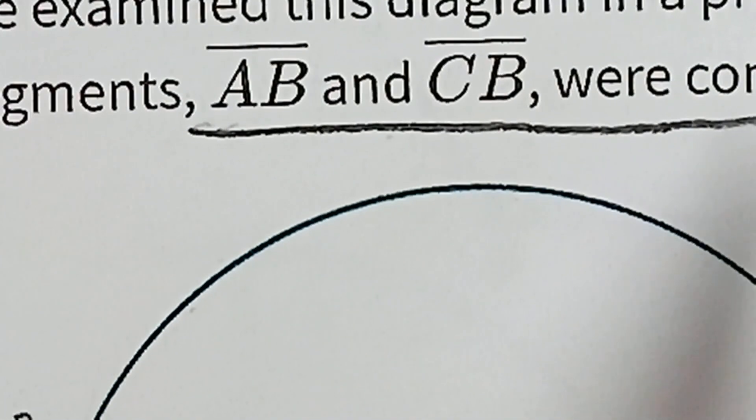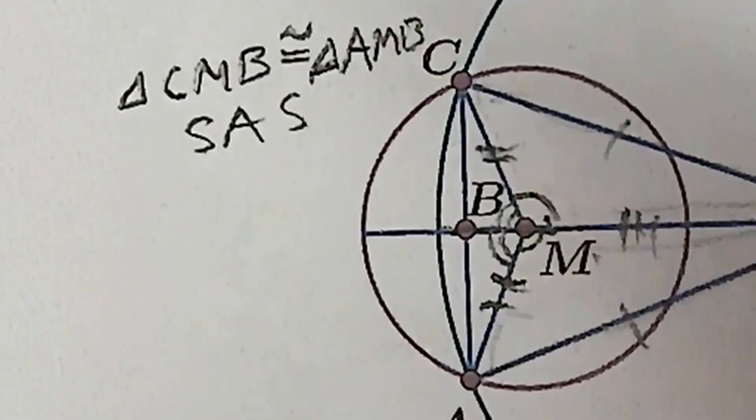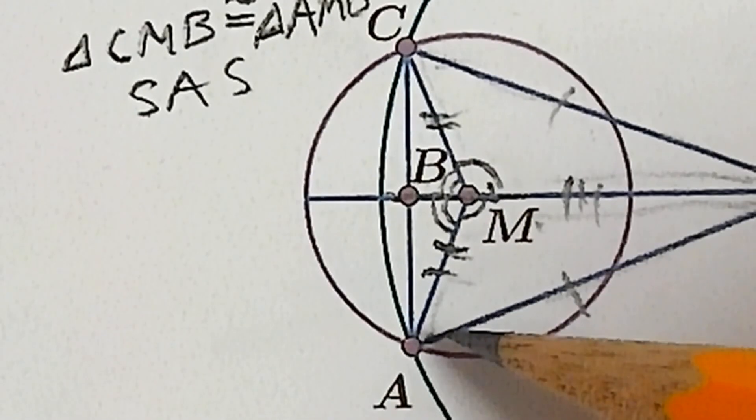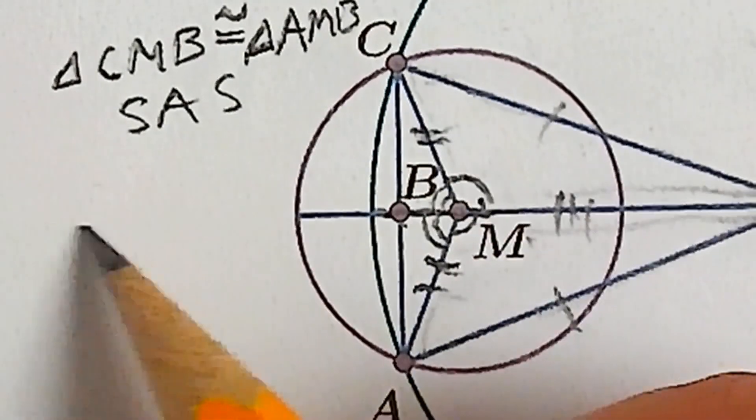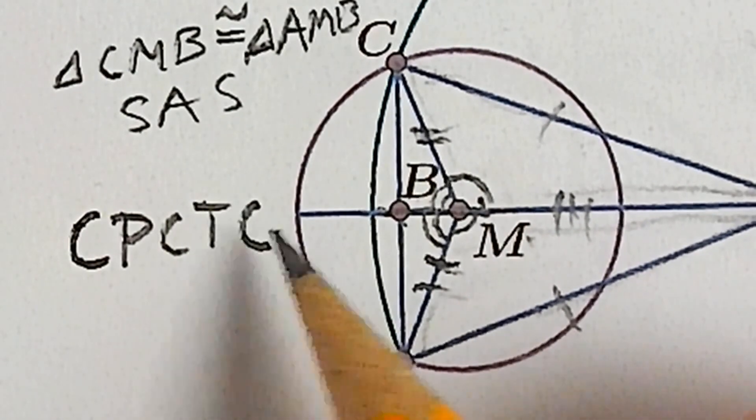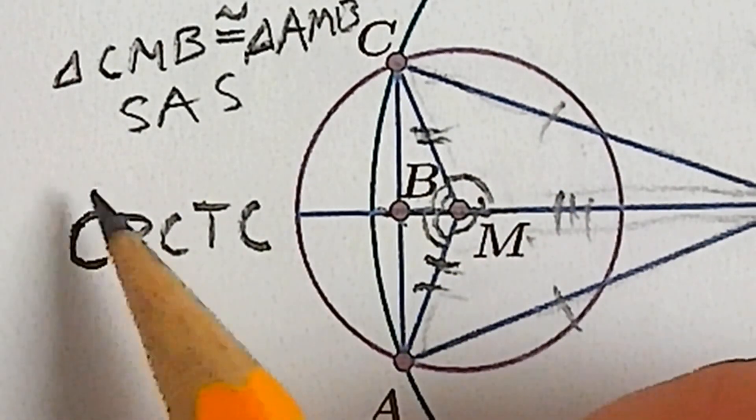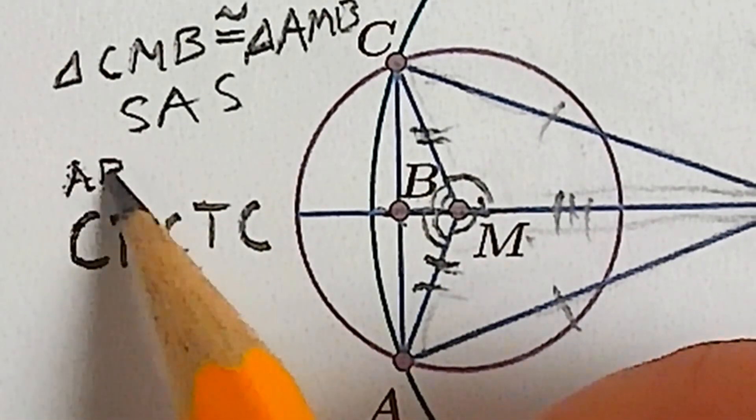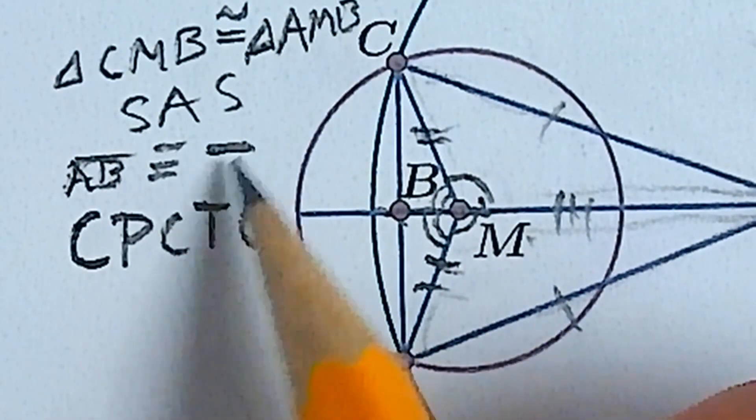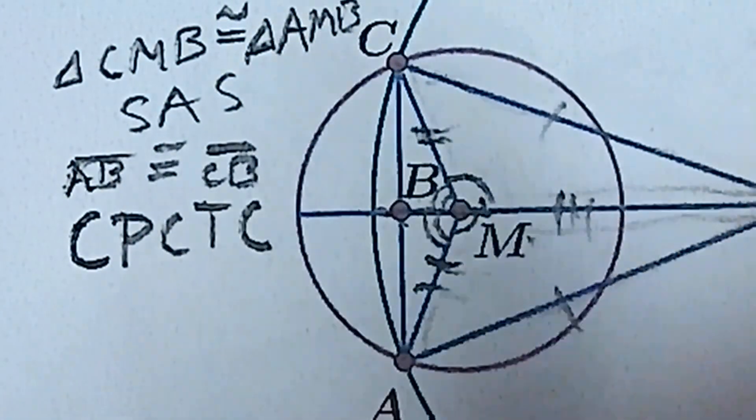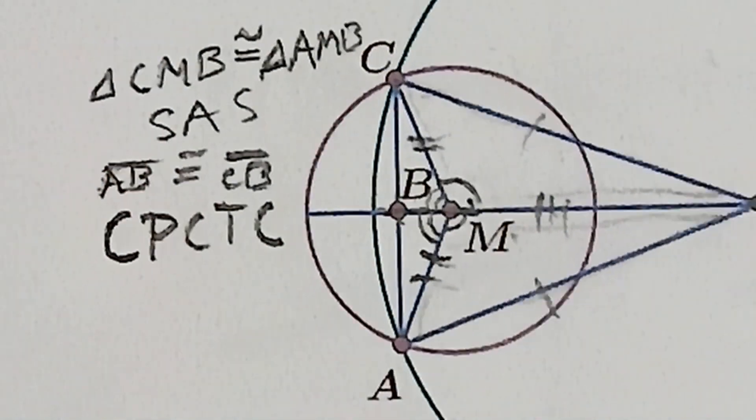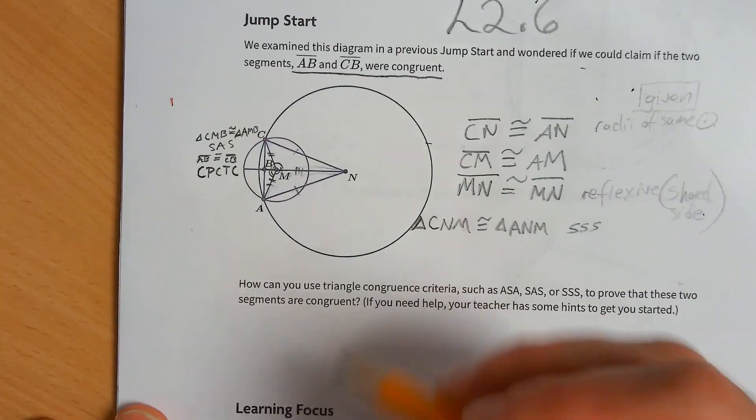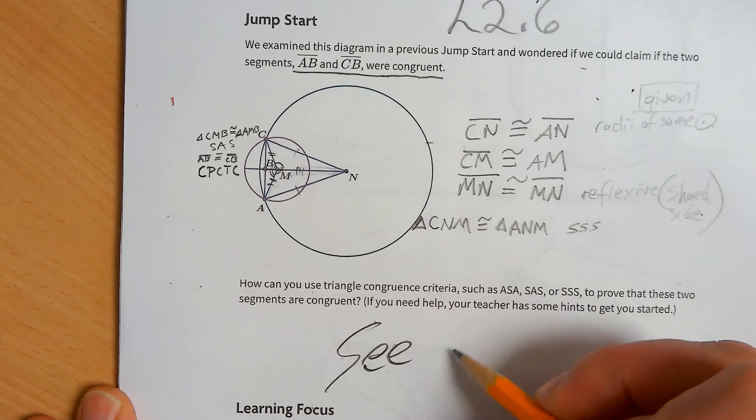AB, CB, are they congruent? AB, CB, well they're corresponding parts of congruent triangles, and corresponding parts of congruent triangles are congruent. So yes, segment AB is congruent to segment CB. Whoo, that was exciting. Now I broke my pencil.